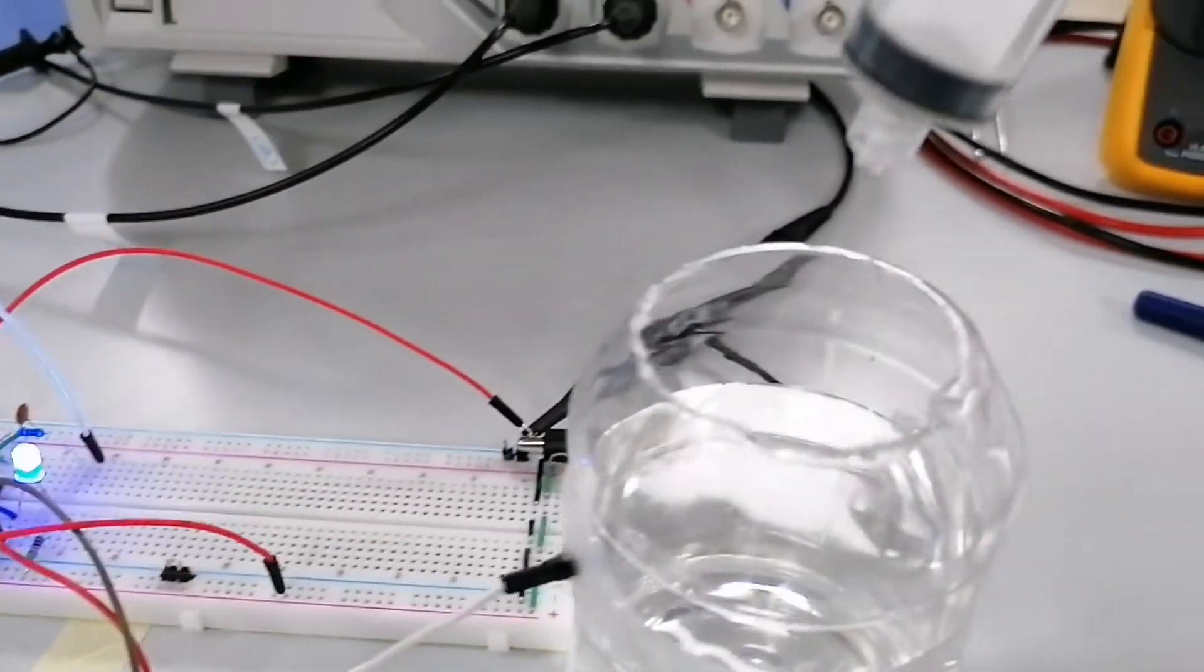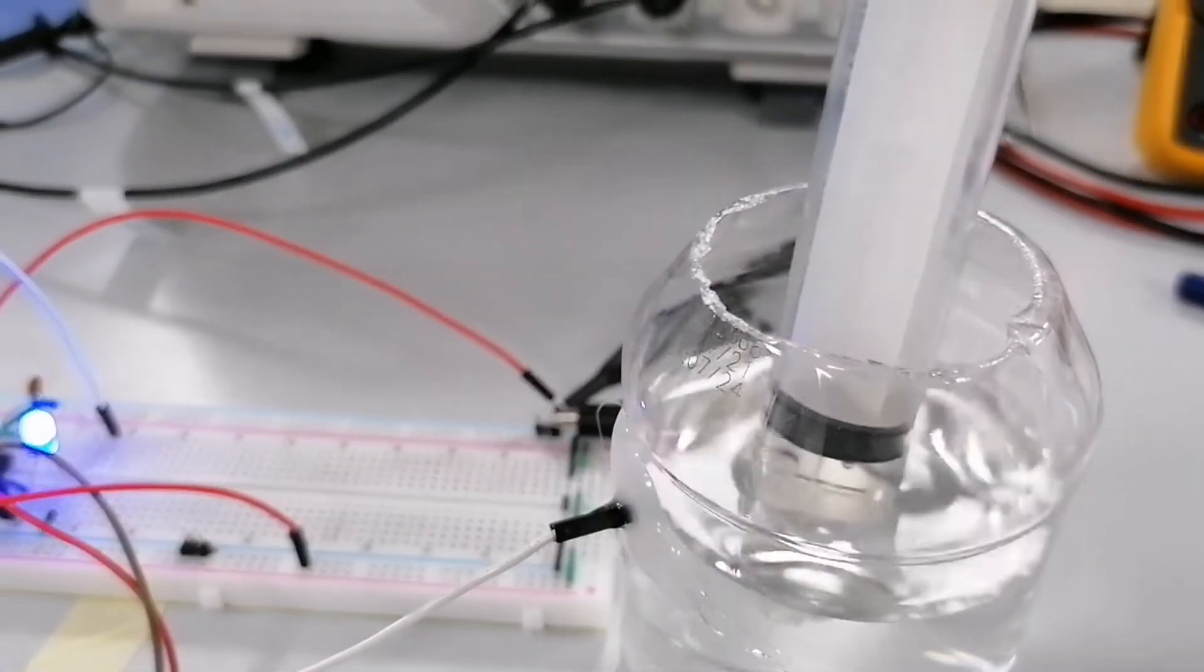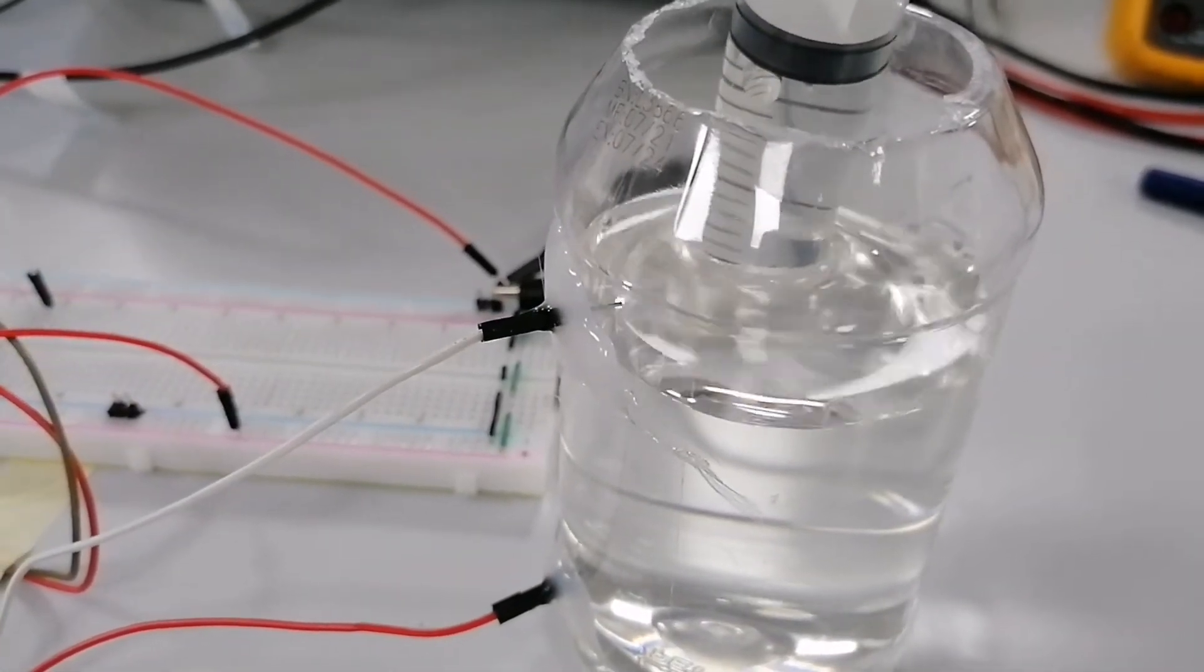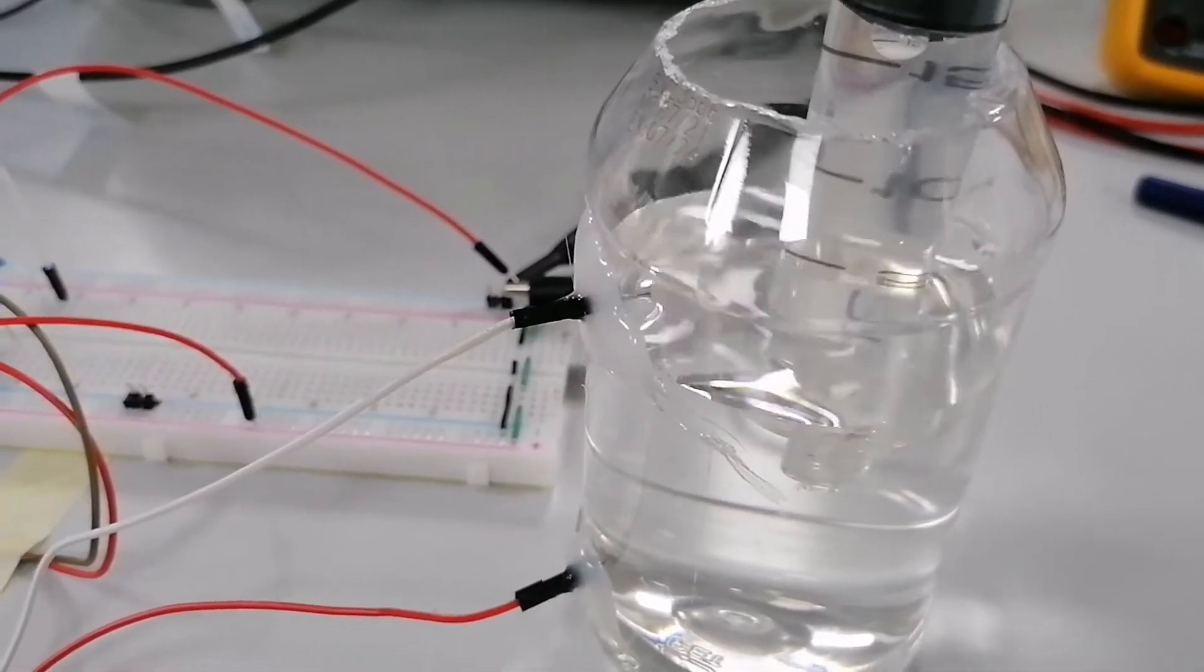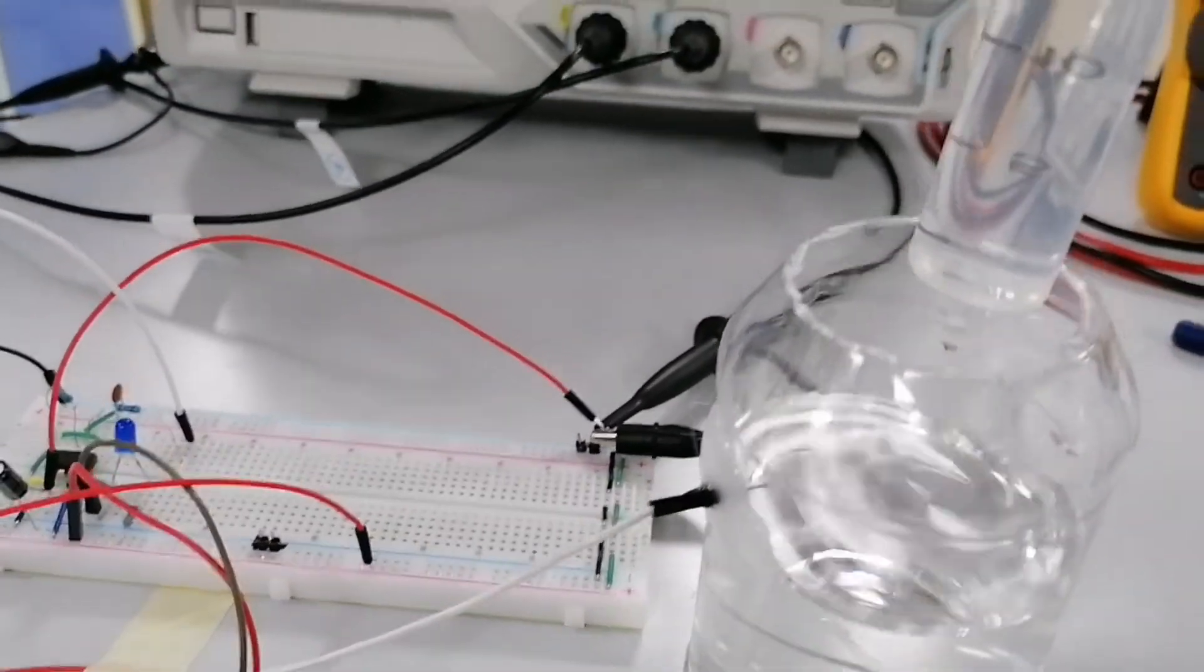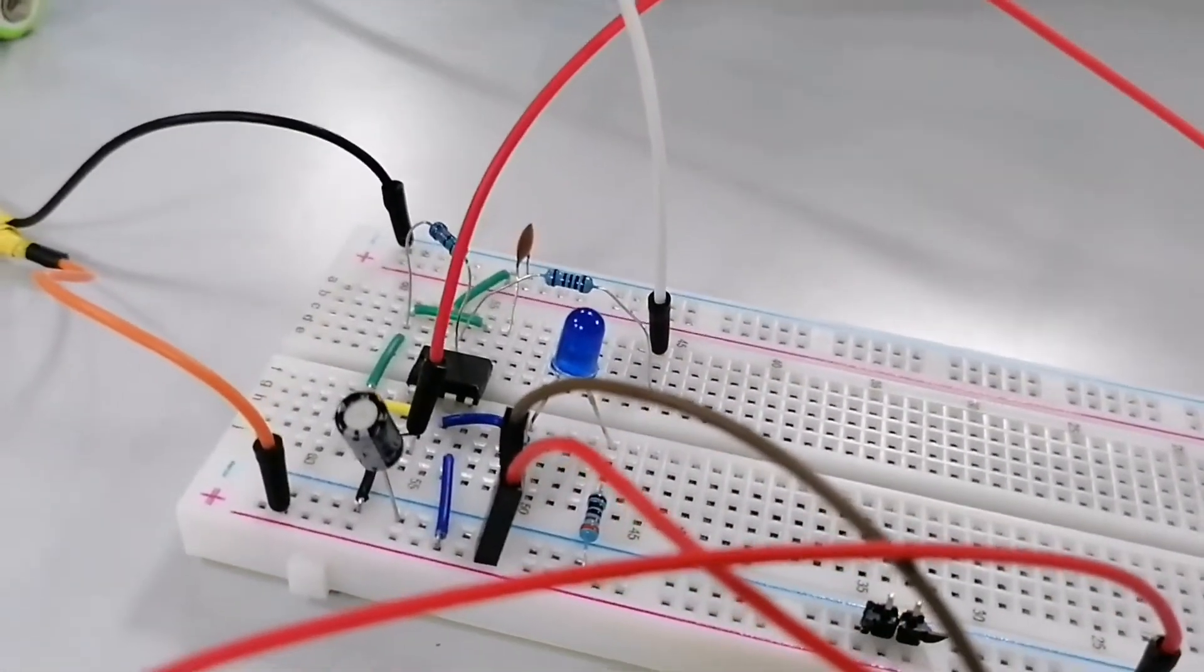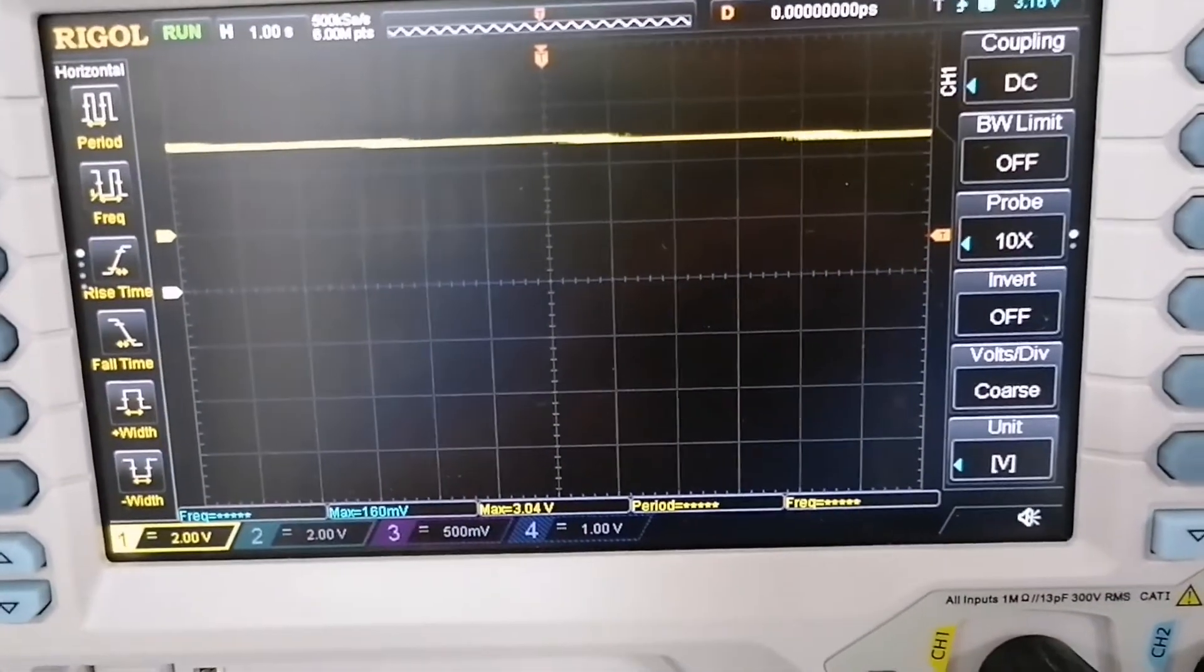Now I will try to suck or reduce the water until the water is below the electrode two. It's not easy to get that water out. See? I reduce the water, and the buzzer and the LED off. And the oscilloscope shows no oscillation.